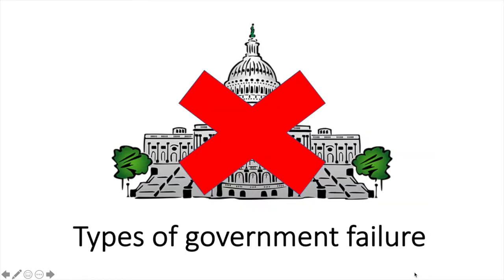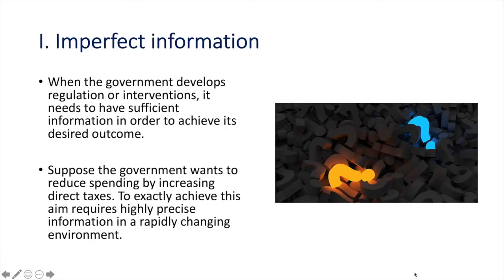Let's now take a look at five types of government failure. There are others as well but these are some of the most important ones to know. First is imperfect information. When the government develops regulation or interventions, it needs to have sufficient information in order to achieve its desired outcome. Suppose the government wants to reduce spending by increasing direct taxes. To exactly achieve this aim requires highly precise information in a rapidly changing environment, making it unrealistic that the government can successfully and precisely accomplish this goal. There will need to be a set of assumptions made that may not be accurate.